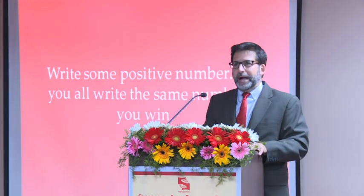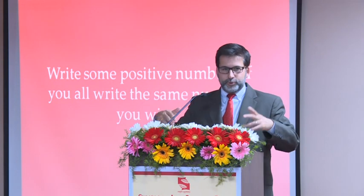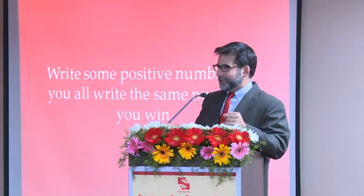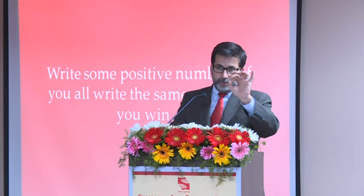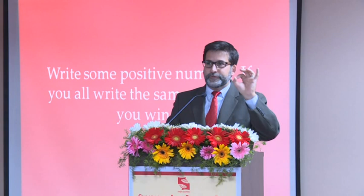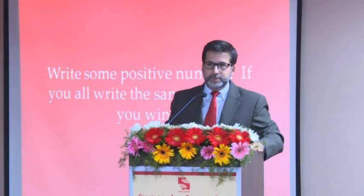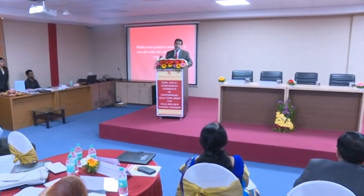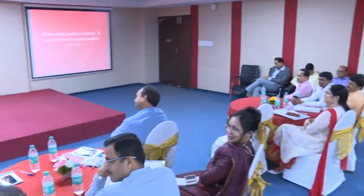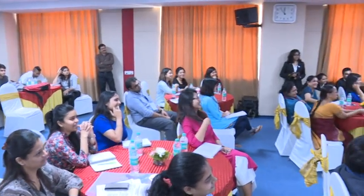Think of a positive number — not negative, not zero, a whole number. If you all think of the same number, you get your $100. Most people say one. Why? It's the first and lowest positive number. Once you go past one, then two, seven, and all those other numbers become possibilities. One is uniquely focal. That's the idea — the way in which government might regulate in these settings is by shaping salience, by increasing the visibility of a given outcome.